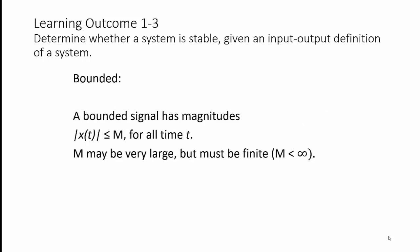Before you can use that definition, you need to know what the term bounded means. A bounded signal has magnitudes — that means the absolute value of x(t) — that are less than or equal to m for all time t. m may be very large, but it must be finite. It can be a hundred, a thousand, ten thousand, a hundred thousand — very large, but it must be finite.